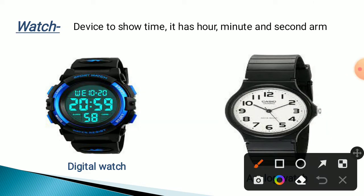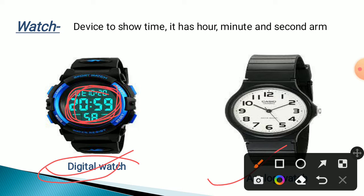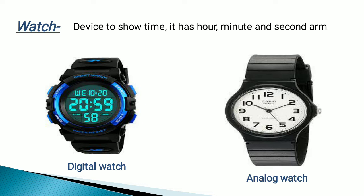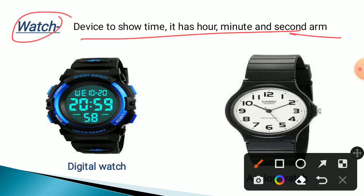Next is the watch. We have seen a digital watch and an analog watch. A digital watch displays time electronically. An analog watch uses hour hand, minute hand, and second hand — three hands in total. Inside the analog watch, a spring controls the motion of the hands, and this is how the watch displays time.